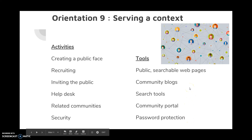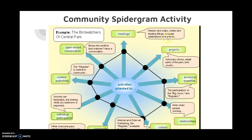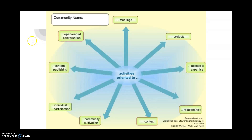These are the nine orientations. Of course, every community is not purely one type, and so I found a cool activity online called a spidergram activity. This example is for bird watchers of Central Park — you place a dot on whether each orientation is important to you. I've included a blank template on the last slide so you can create your own. When planning your online community, you need to think about these nine styles. Thank you very much for watching. Have a good day.